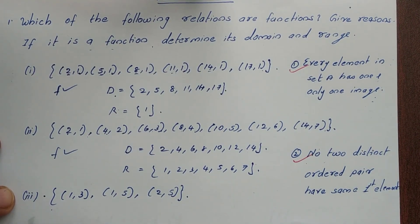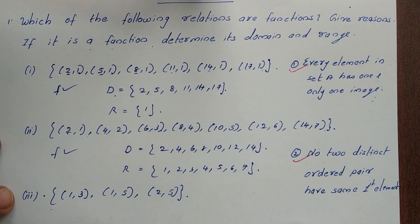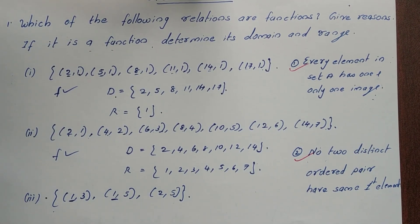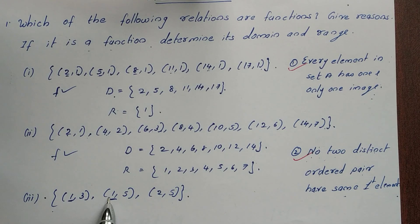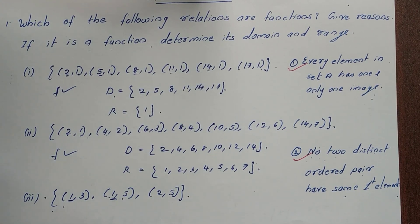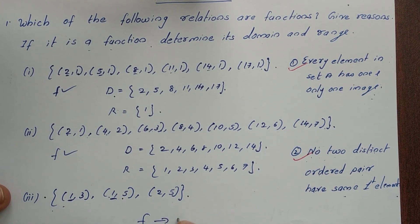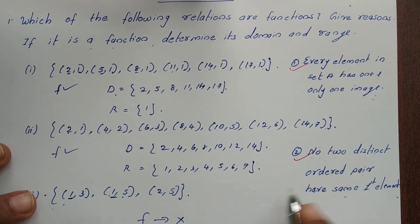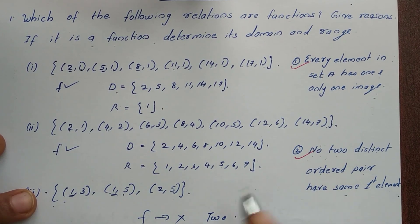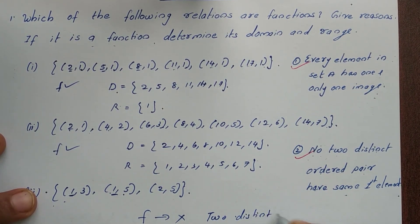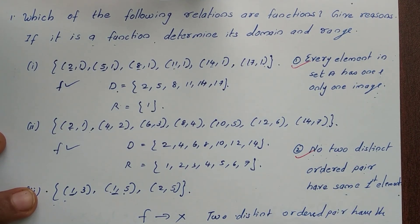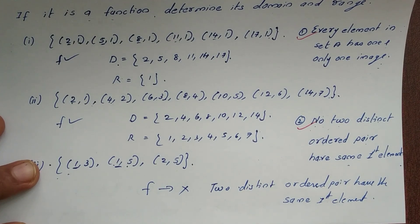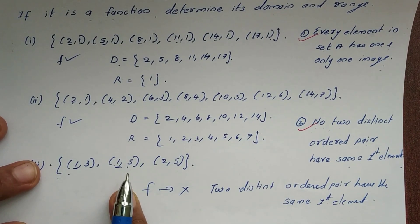Third question: the ordered pairs include (1,3) and (1,5). The first element 1 repeats with different images. Since two distinct ordered pairs have the same first element, this is not a function.